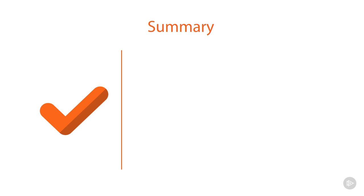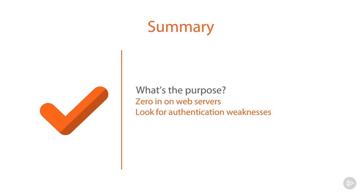In this module we went through and took a look at the steps you would need to go through for pentesting web applications. We talked about the purposes, needing to zero in on which servers are hosting web applications or which ones are our front-end servers. We also talked about looking for any type of authentication weaknesses that may exist — remember we may be authenticated by one device but being passed through to a different system or target altogether. We then talked about configuration errors, sometimes caused by humans and sometimes created by the manufacturer themselves.